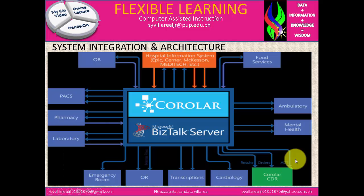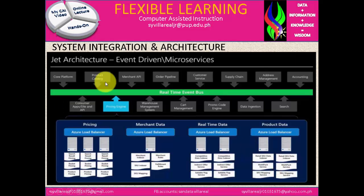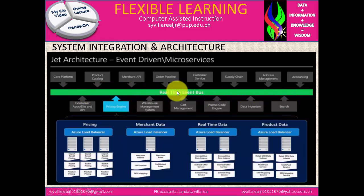Next we have the solution landscape and the Bistock server — this is their system integration architecture. We also have the e-commerce portal as a system integration example, with the user, supplier, group customer, management, and call center components. Next we have the JET architecture event-driven microservices as a system integration architecture. They also use a bus-line topology or bus management here.